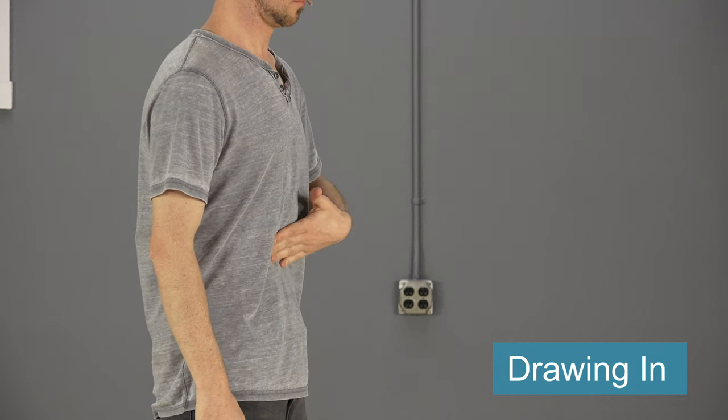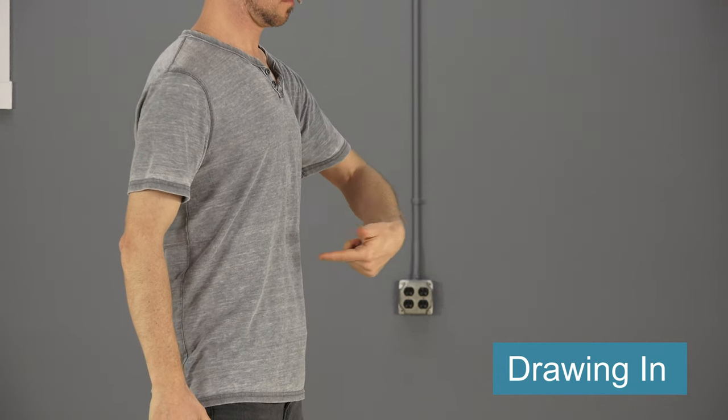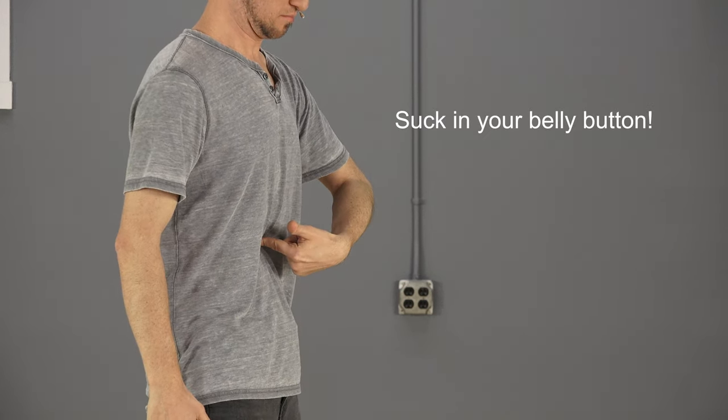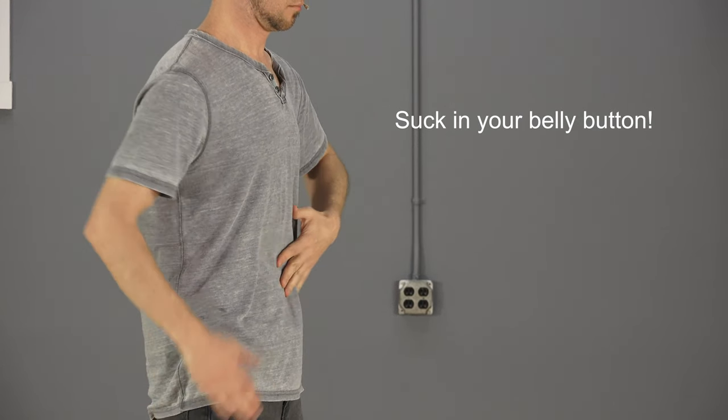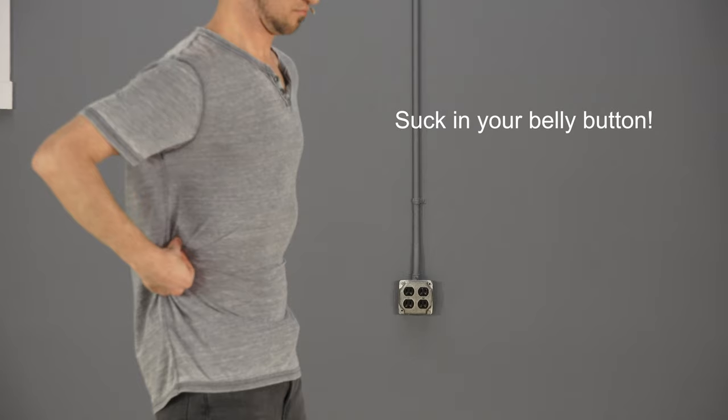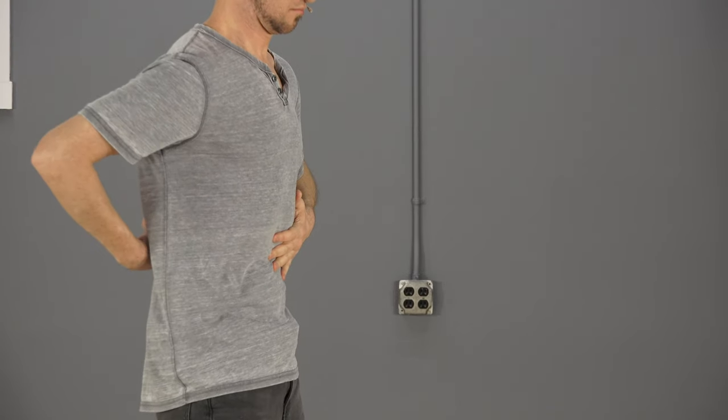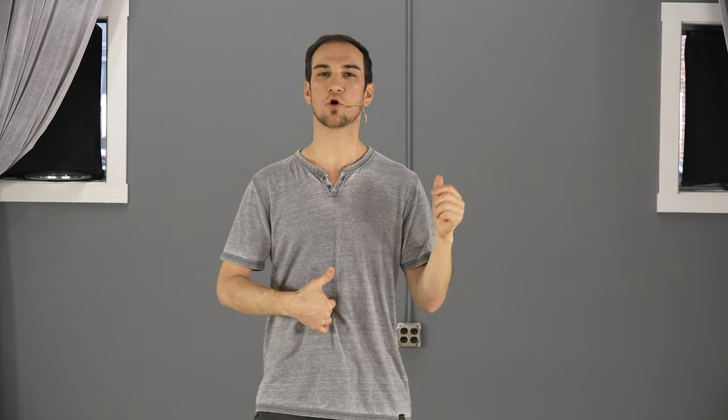Now the drawing in maneuver or hollowing out your stomach means that you are pulling your stomach in. So it's kind of like you want to bring your belly button back towards your spine. So you're creating space in your stomach. You're basically pulling in your stomach, pulling in your belly button.